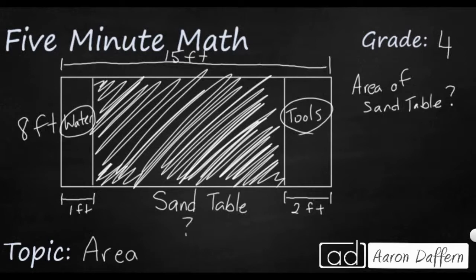Well let's make sure we get our equation. Area equals length times width. And we know that our width is going to be 8 because this 8 goes for this whole section right here. So that's pretty easy. We'll write length times 8. Now let's see if we can figure out what the length of this sand table section is.